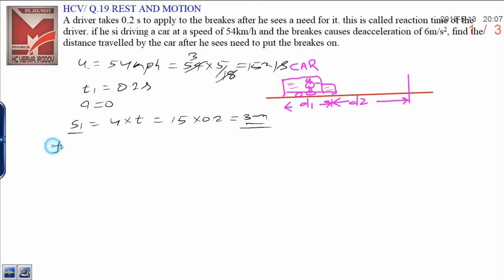Finally, it comes to rest because it is retarded. Therefore, final velocity is 0 and acceleration, which is called retardation, is minus 6 meters per second squared.